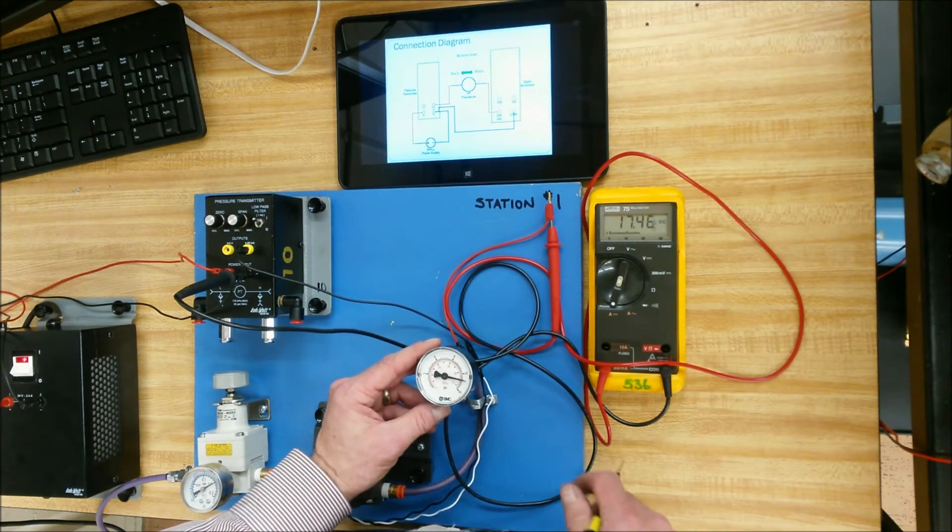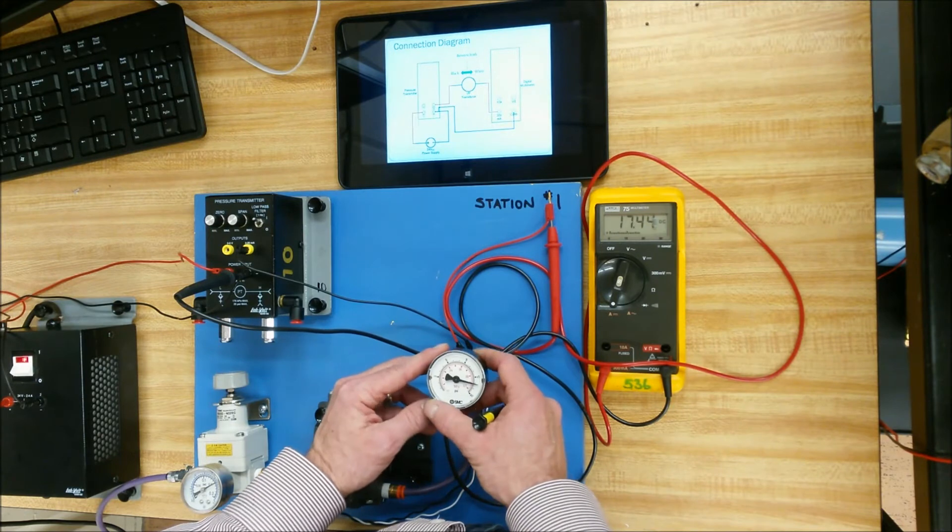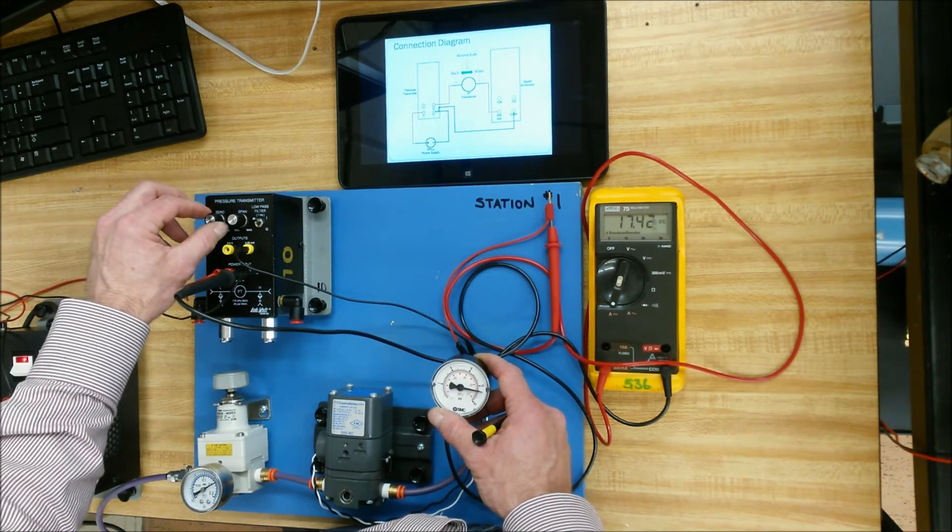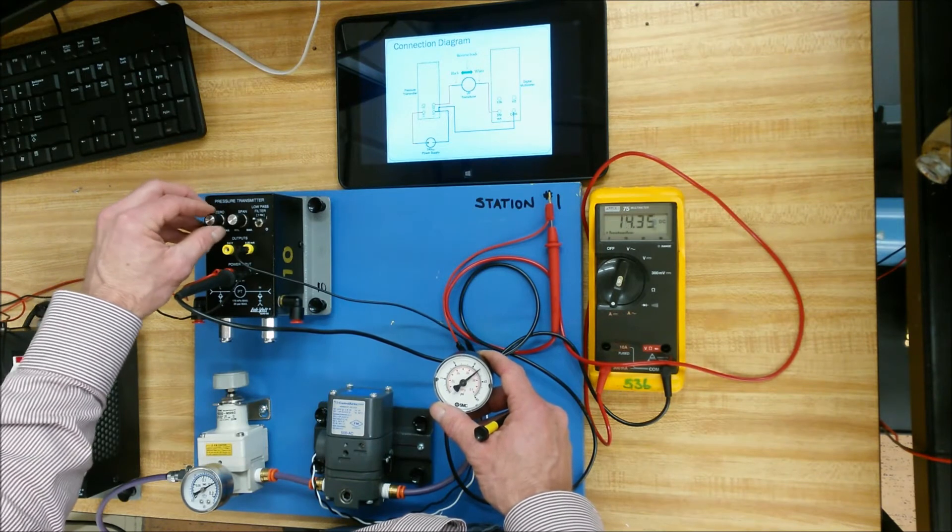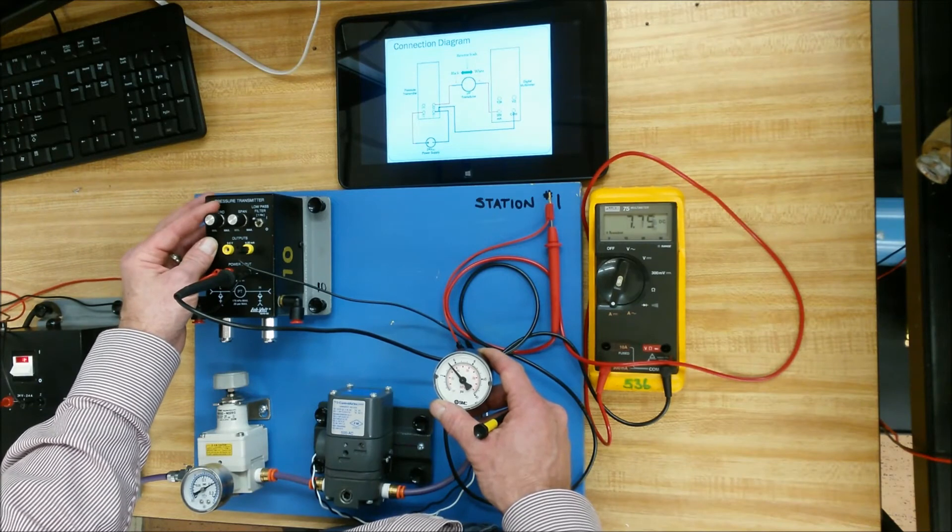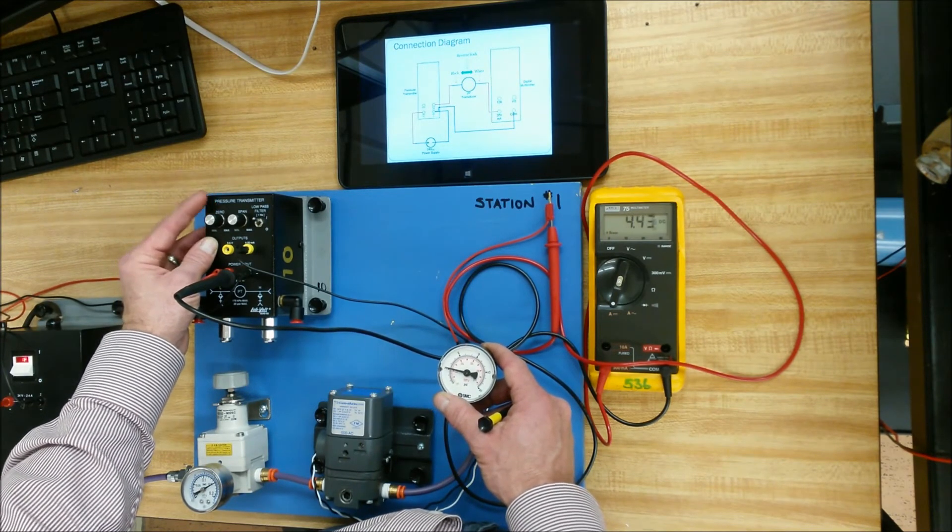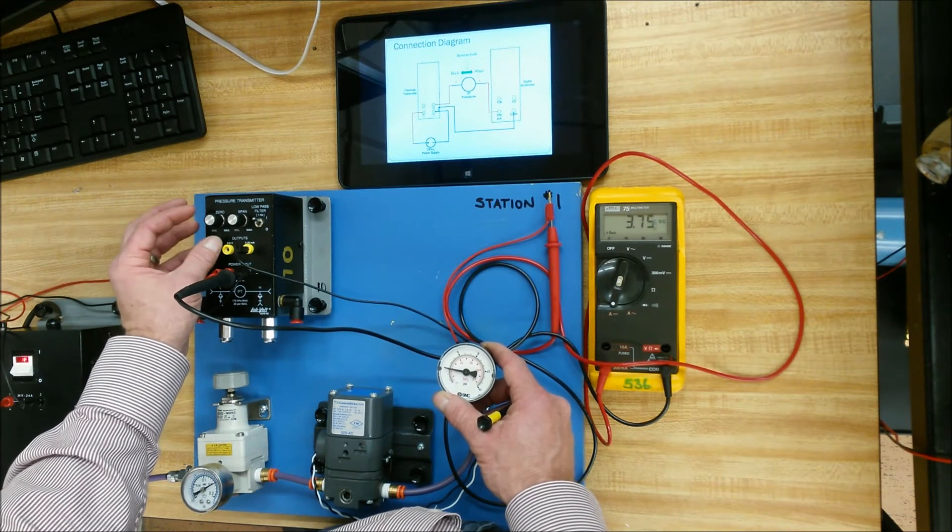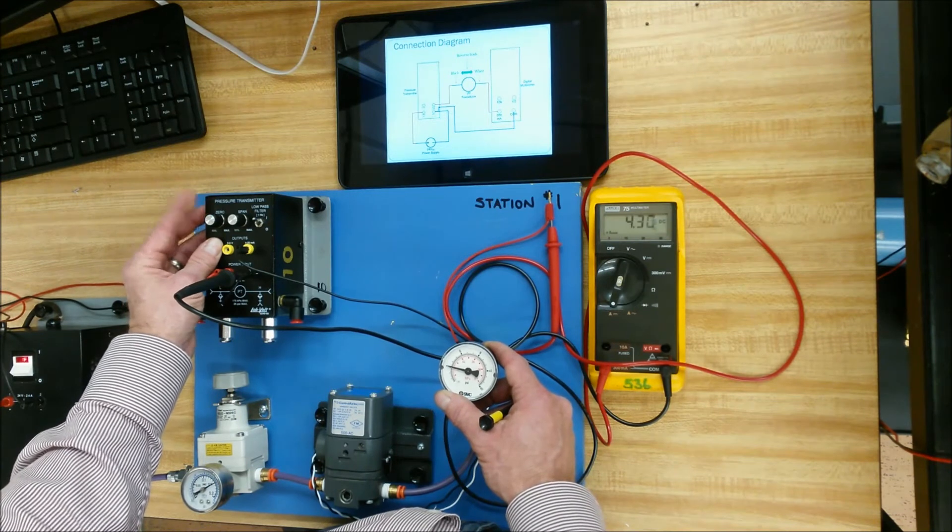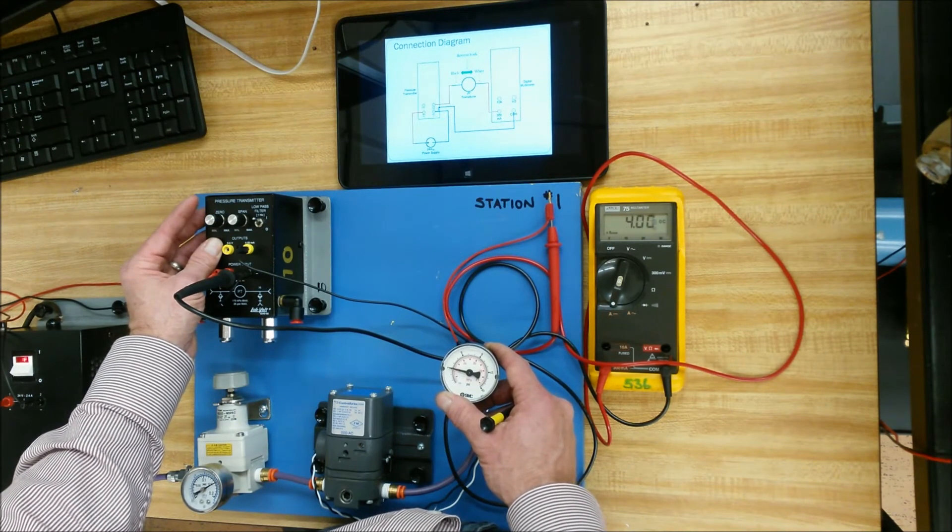So the next thing that we're going to have to do, now that everything's set up, is we're going to have to set the zero and the span. So again, this is just a current source. So I'm going to use the zero knob and reduce the current. I'm not touching the span knob here, just using this knob to control the amount of current flowing in the circuit. And so I'm going to bring this down to 4 milliamps. Now again, if I keep going down, the meter doesn't change. So bring it up until you see the meter just bump, and then bring it back down. So that's essentially 4 milliamps.